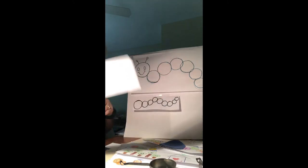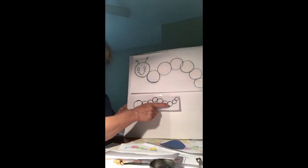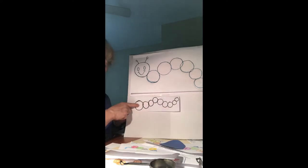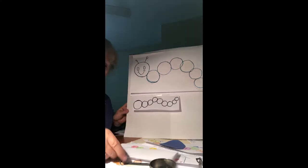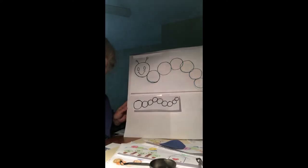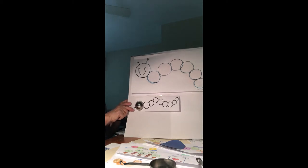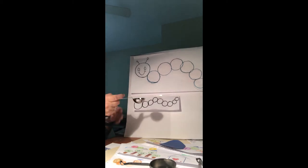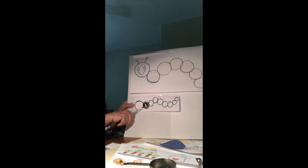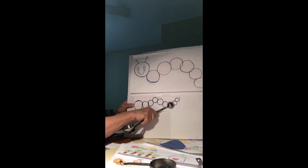Now here is a caterpillar drawn onto this half sheet of paper. This time I used a measuring spoon. I used the tablespoon to make the head of the caterpillar, and then I used the teaspoon and drew circles all the way across.